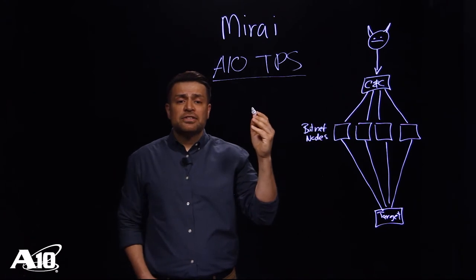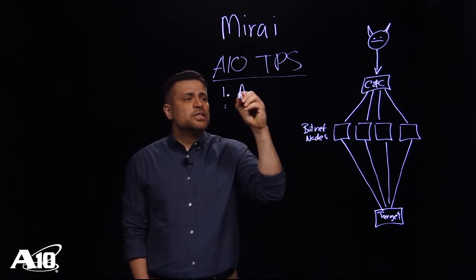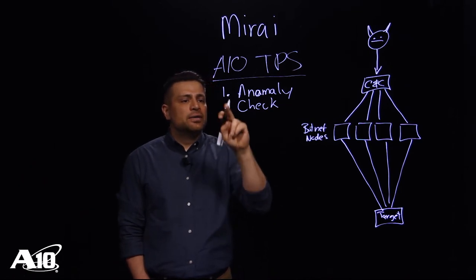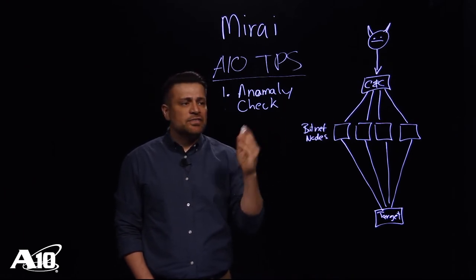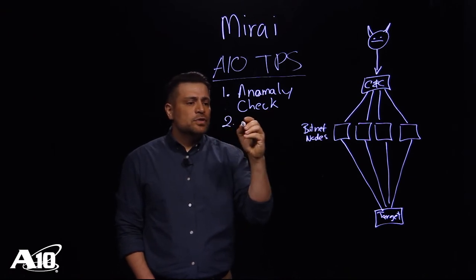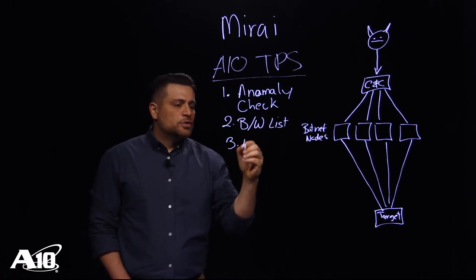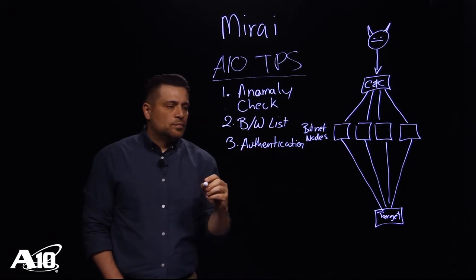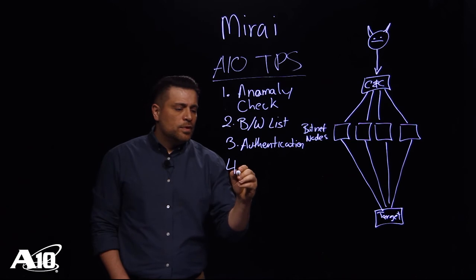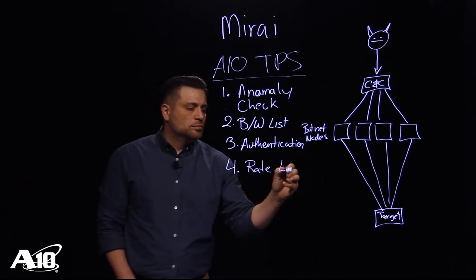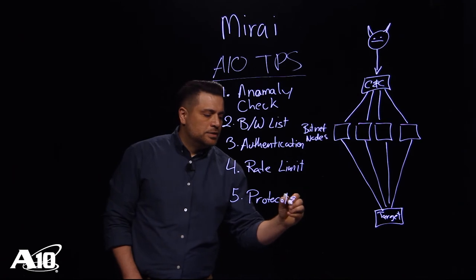We have developed five principle methods for effective DDoS mitigation. One is anomaly check — we check for traffic and packet conformance against RFC standards; if it doesn't match, it gets dropped in hardware. Two, we do black and white lists. Three, we do authentication challenges. Four, we do rate limiting. And five, we can do protocol and application checks.